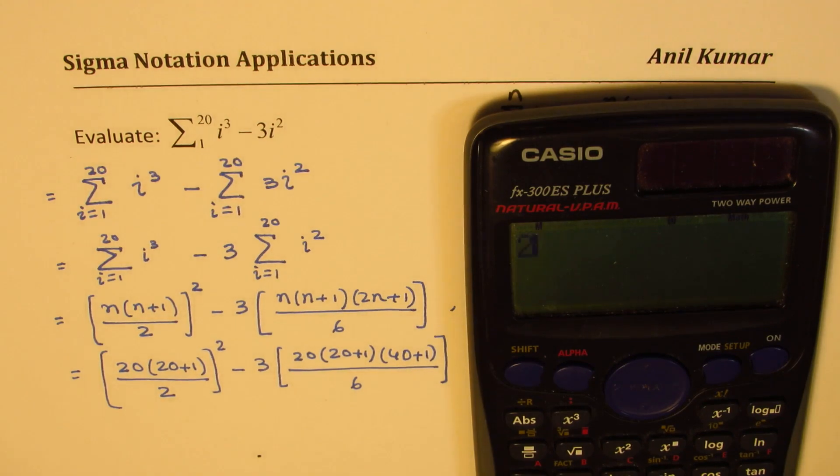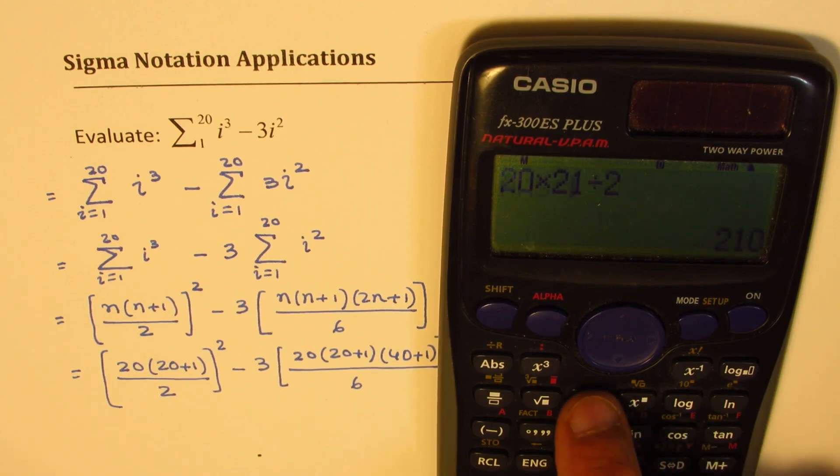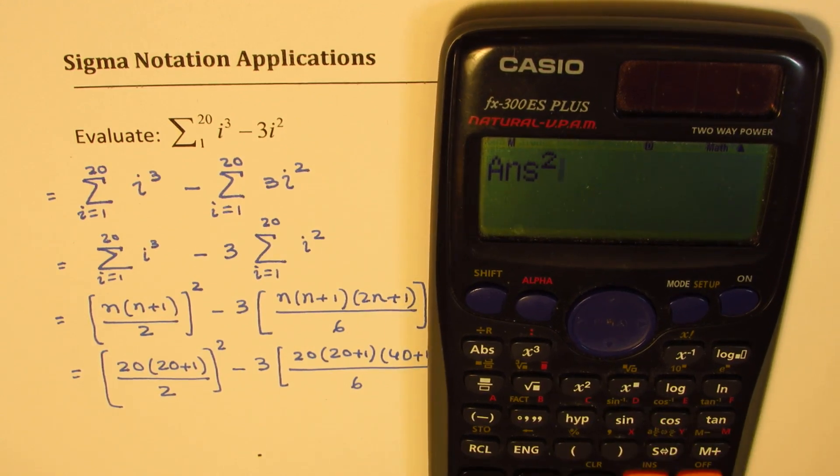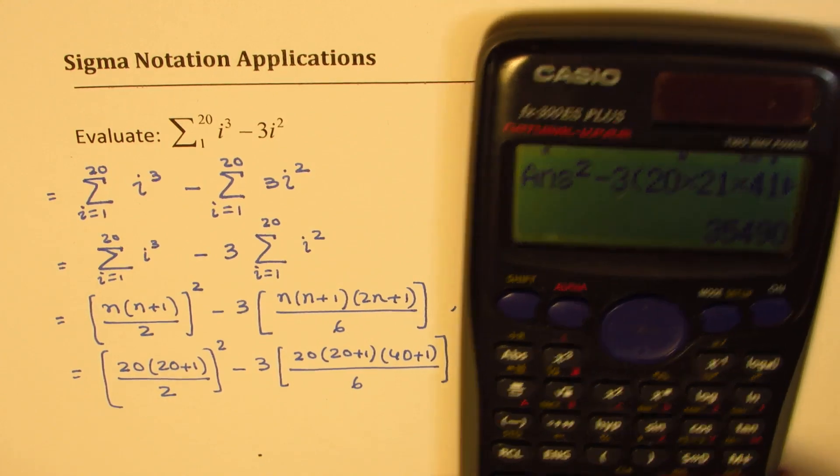We have 20 times, we can write 21, divide by 2, square this number, and then take away 3 times within brackets 20 times 21 times 41, divide by 6, bracket close, equals 2. So we get our answer, which is 35490.